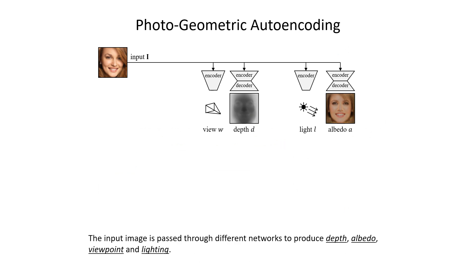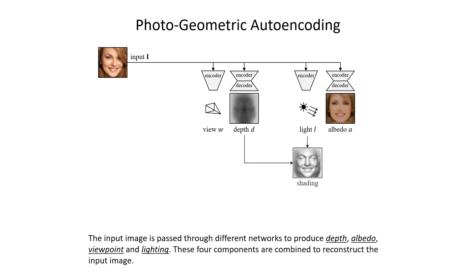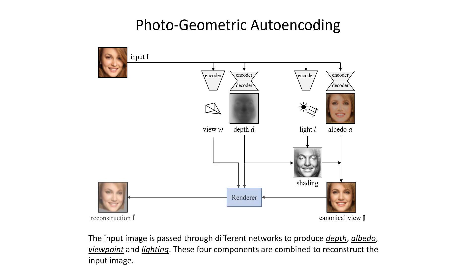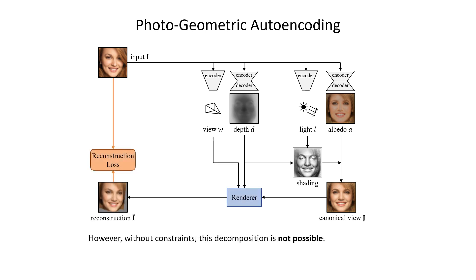In detail, each training image is passed through different networks to produce depth, albedo, viewpoint, and lighting. These four components are combined to reconstruct the input image. However, without constraints, this decomposition is not possible, as degenerate solutions exist.